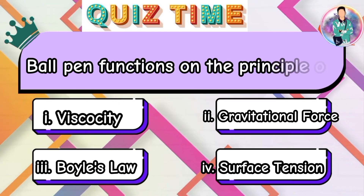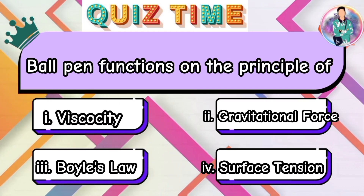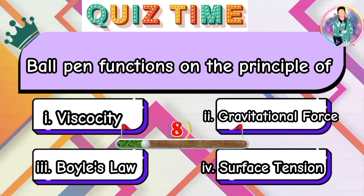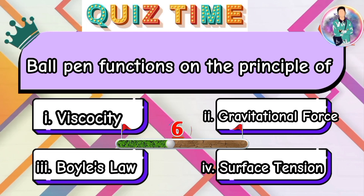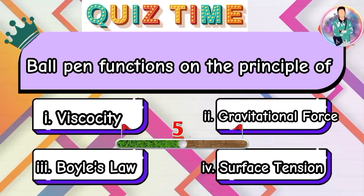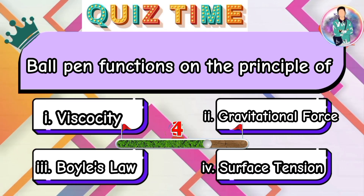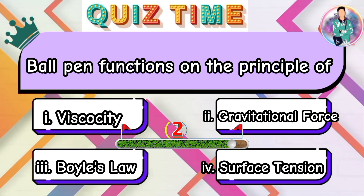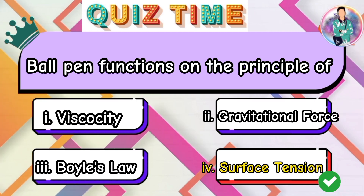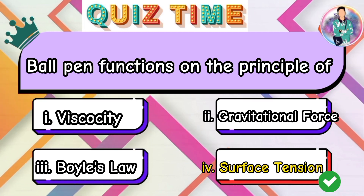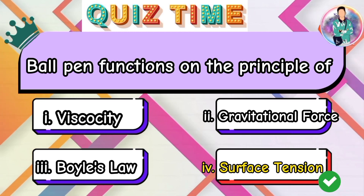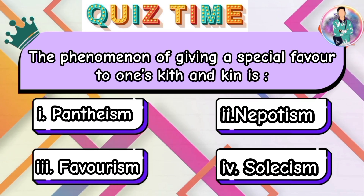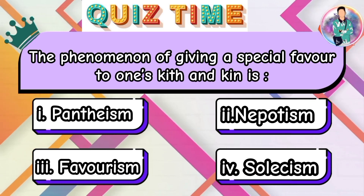A ball pen functions on the principle of? The phenomenon of giving special favor to one's kith and kin is?